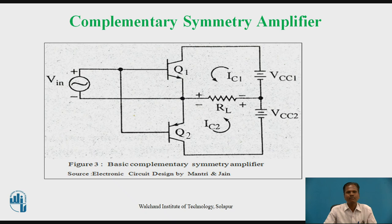In the positive half cycle of the input AC voltage signal, transistor Q1 conducts and load resistance RL receives current and voltage. At the same time, transistor Q2 remains in cut-off state. In the negative half cycle, Q1 is in cut-off and Q2 conducts, with current flowing through the collector-emitter circuit and through load resistance RL. Load resistance RL is directly connected in the collector-emitter circuit. In this way, we can eliminate both the input driver transformer and output coupling transformer using a complementary symmetry push-pull amplifier.